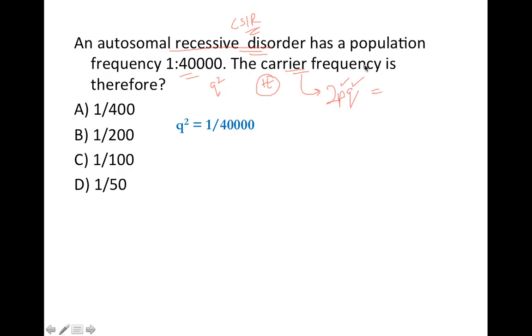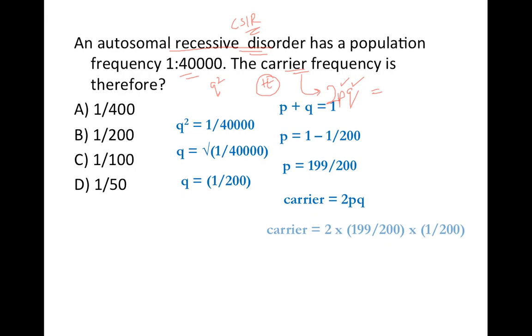So q squared is equal to 1 by 40,000, which means q is the square root of it, which gives us 1 by 200. So p would be, p plus q is equal to 1, so p is equal to 1 minus 1 by 200, that comes to 199 by 200. And the carrier is 2pq. If we multiply 2pq, what we are going to get is 2 into 199 by 200 into 1 by 200. Again we make an assumption here that 199 is equal to 200. This assumption we are doing because we already have an option given as a choice. So the final answer is 1 by 100.